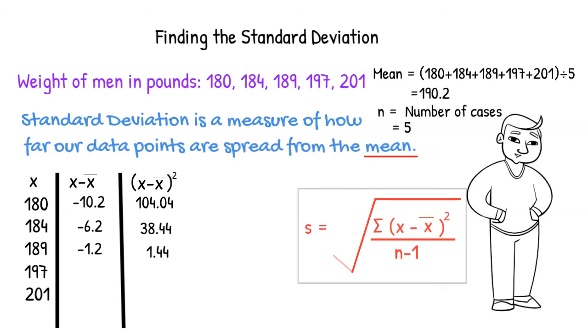197 minus 190.2 gives us 6.8. 6.8 squared gives us 46.24.